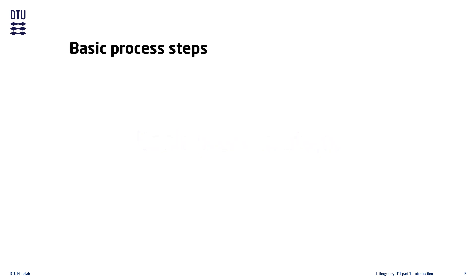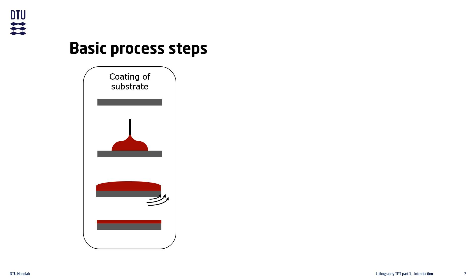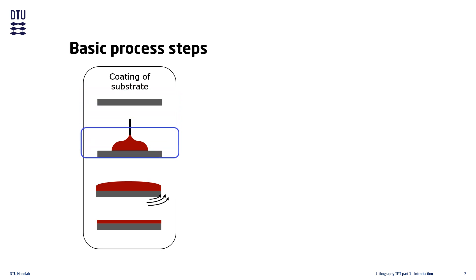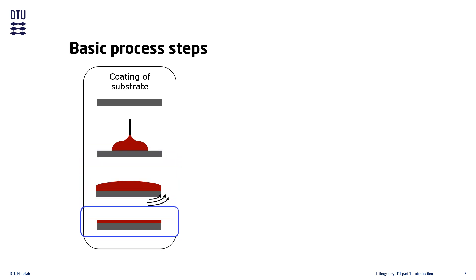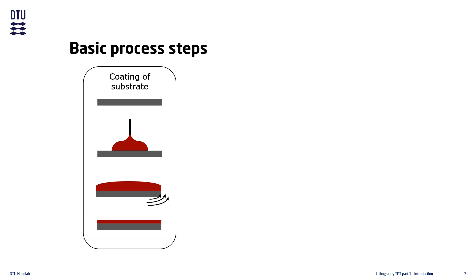The lithography process begins by coating the substrate with a photosensitive resist. The most common coating method is spin coating. The spin coating process begins with a substrate without resist; resist is dispensed on the surface of the substrate and the substrate is then rotated at high speed. The final product is a substrate that now has a thin resist film on the surface.